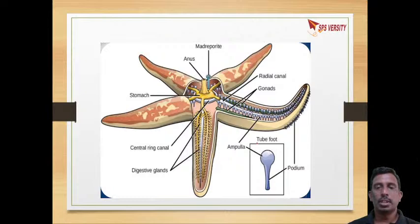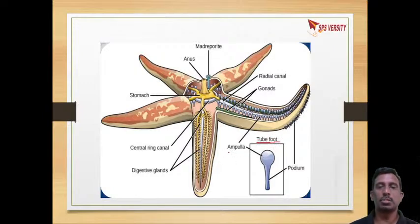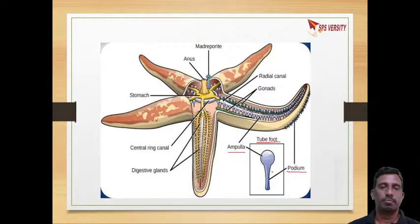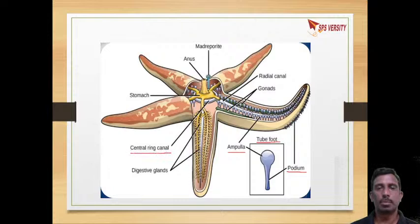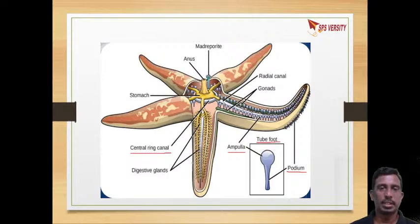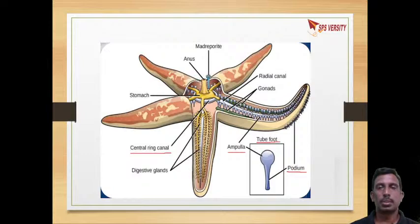Looking at the internal structure of a starfish: tube feet have two parts — the enlarged one is called the ampulla and the elongated one is called the podium. There is a central ring-like canal which supplies nerves to each and every arm. Digestive glands are present. The anus is on the upper side and the mouth is on the lower side.